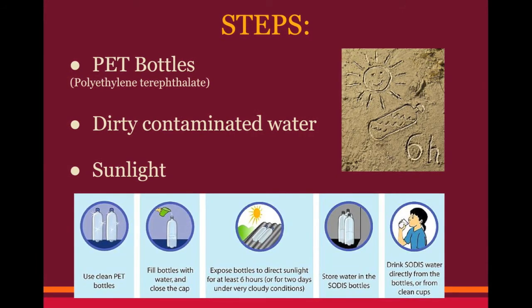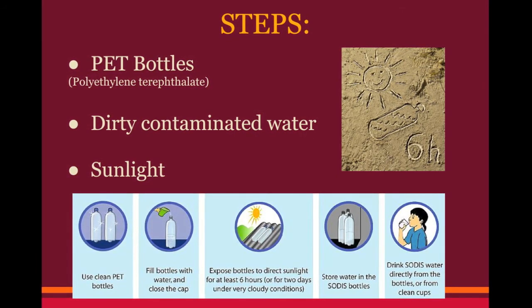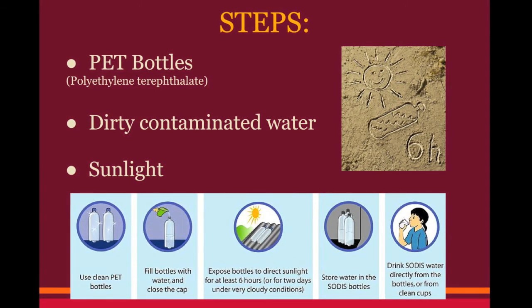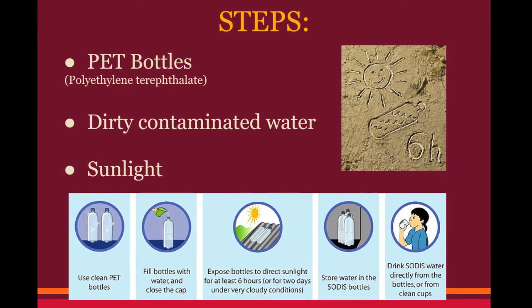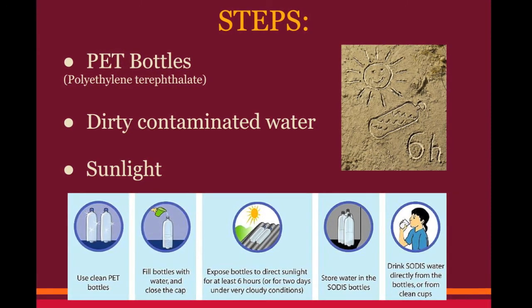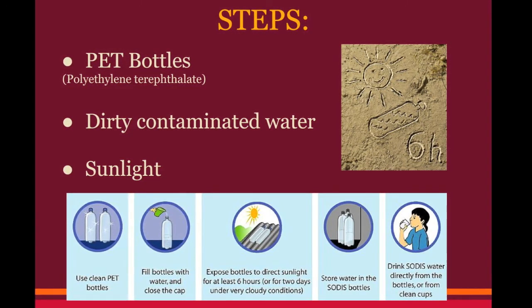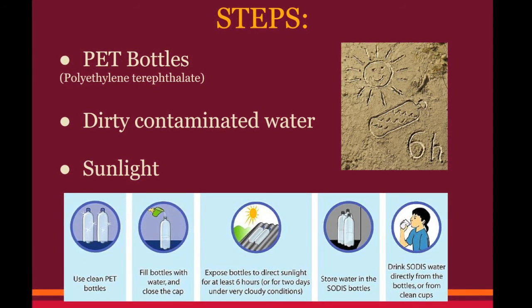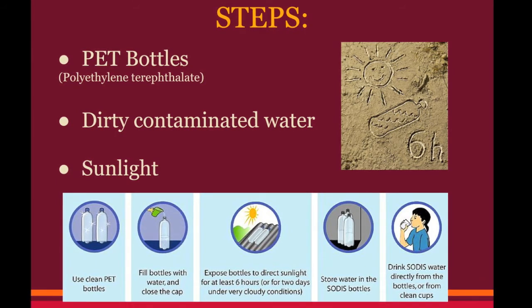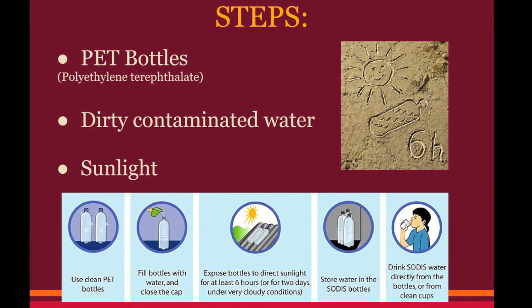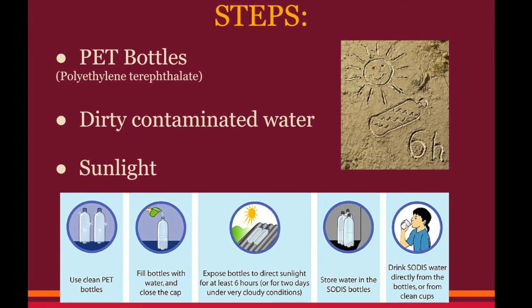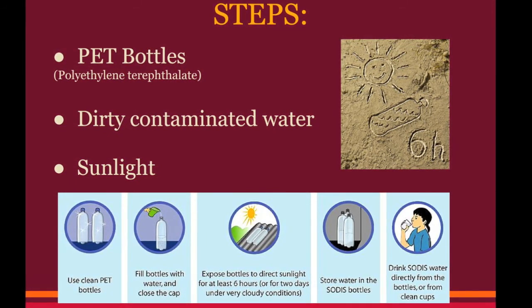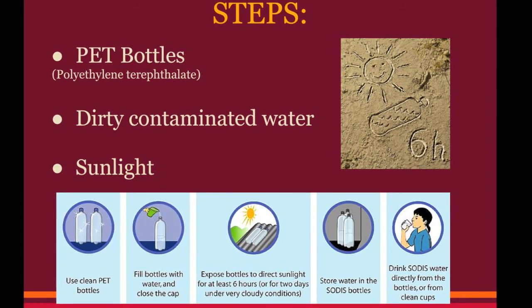To properly clean water using the SODIS method, you need several things: PET bottles, which is short for polyethylene terephthalate, sunlight, and the contaminated water. Once you have everything you need, the steps are simple. First, you must put the dirty water in the PET bottles. You then put the PET bottles in direct sunlight and let them sit on a hard surface, such as a table or roof, for 6 hours. And it is done. The water is now clean and you can either drink the water right away or store it and save it for later.